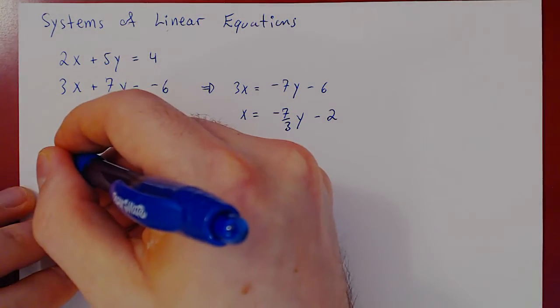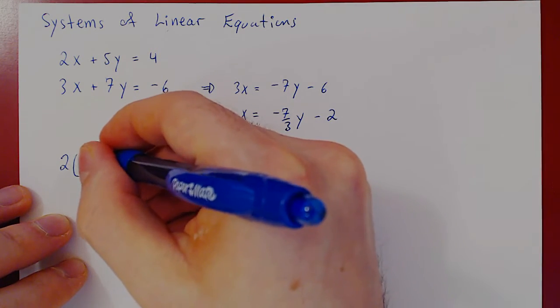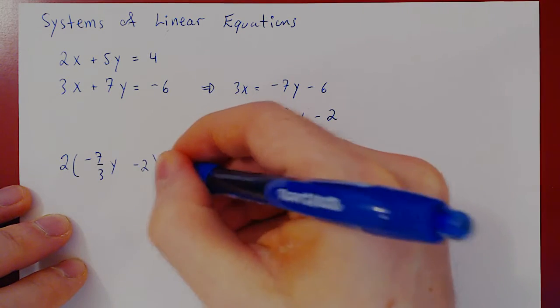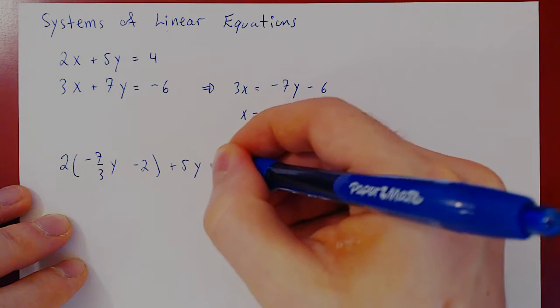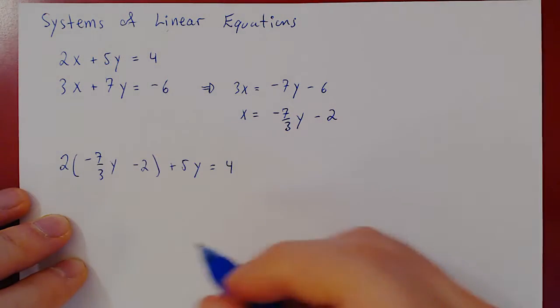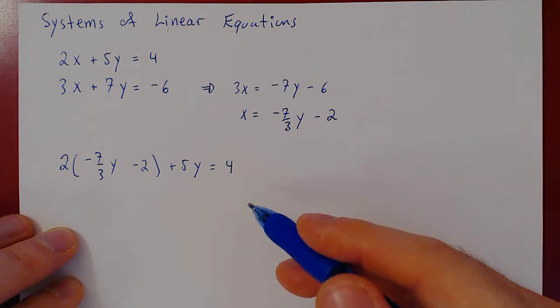So we have 2 times x, negative 7 over 3y minus 2, plus 5y equals 4. From the second equation, one equation, one variable, we should be able to solve for y quite easily.